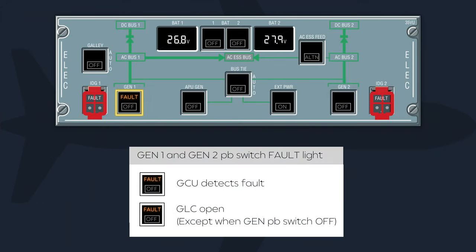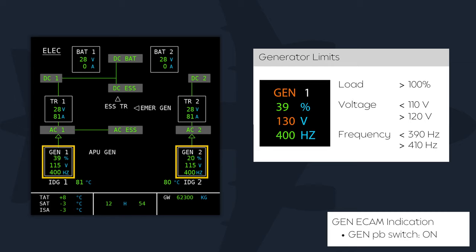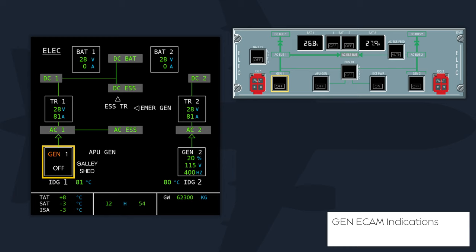The generator 1 or 2 push button switch will indicate fault if its associated GCU detects a fault within the generator, opening the generator line contactor, or if the line contactor opens while the push button is in the on position. When on, the ECAM ELEC page displays generator 1 or 2 in white, changing to amber if generator load, voltage, or frequency are outside set limits. Load, voltage, and frequency indications are normally green, changing to amber if limits are exceeded. When the push button is selected off, parameters are replaced with a white OFF, generator is displayed in amber, and the number 1 or 2 is white if the engine is running, amber if shut down.